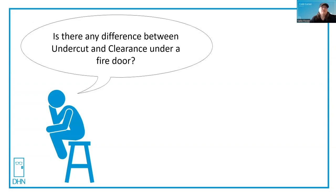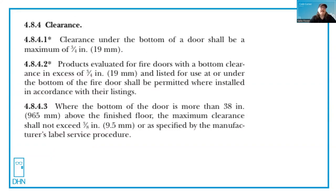As defined by NFPA 80, clearance under the bottom of a door shall be a maximum of three quarters of an inch. That clearance is from the bottom of the door to the top of either a raised threshold or the floor.